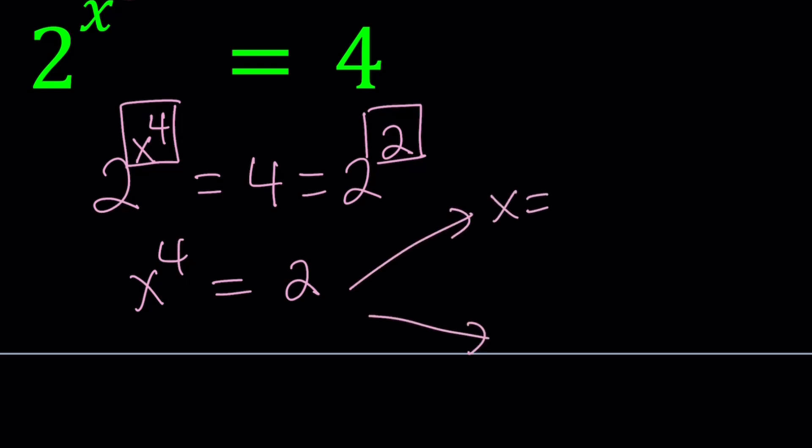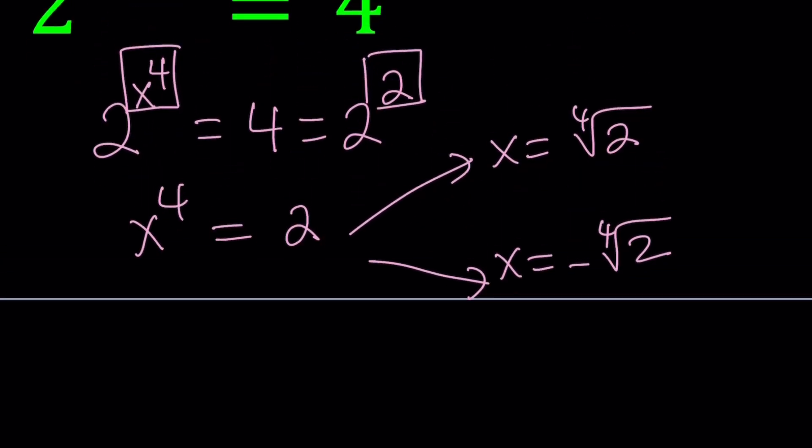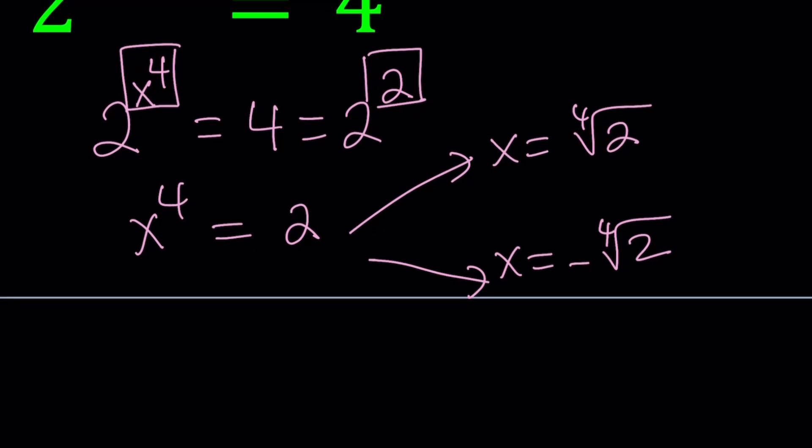x is either the fourth root of 2 or the opposite of that, because 4 is an even number. When you raise a negative number to the fourth power, it's the same as if you are raising the positive version, right? Same as the square - it's just square the square.